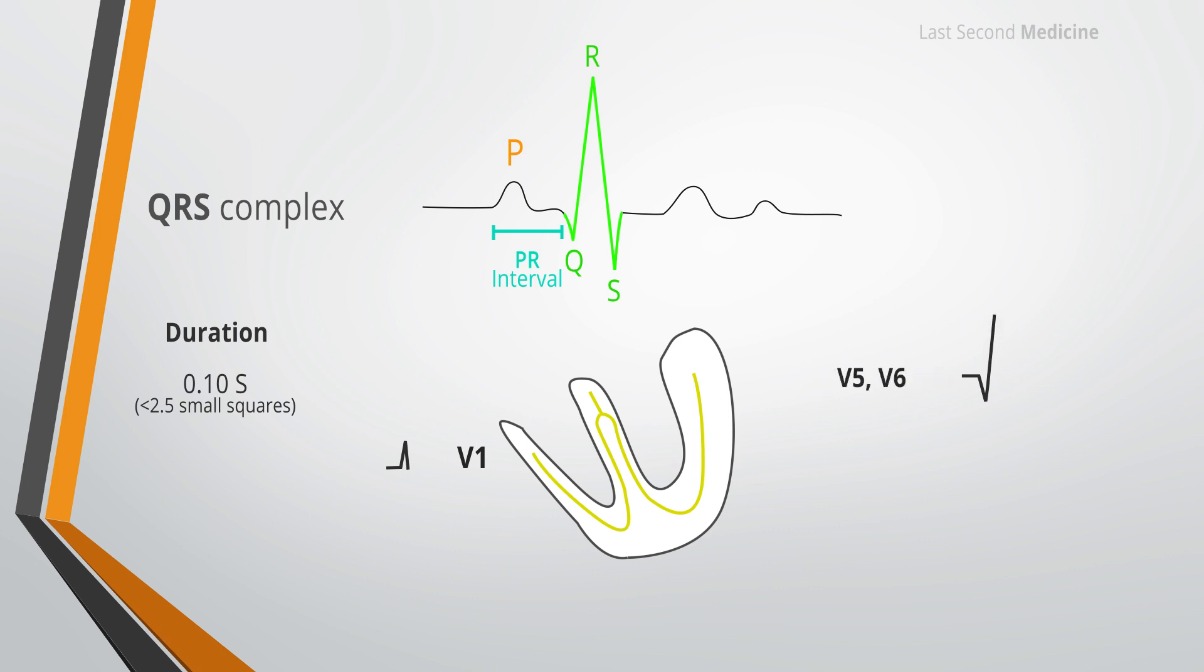Therefore, left-sided precordial leads register a large R wave as the net flow of electrical current is toward these leads. In lead V1, on the other hand, the initial small R wave that was produced from septal depolarization wave is now followed by a large negative deflection, which is an S wave.